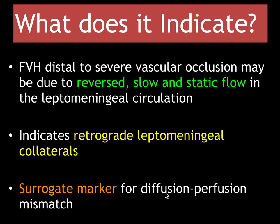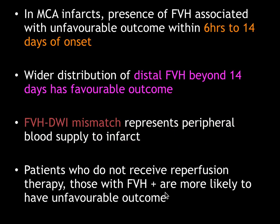So what does FVH indicate? FVH distal to severe vascular occlusion could be due to reversed, slow, and static flow in the leptomeningeal circulation. It indicates retrograde leptomeningeal collaterals and is also a surrogate marker for diffusion-perfusion mismatch. In MCA infarcts, the presence of FLAIR vascular hyperintensity is associated with unfavorable outcome within 6 hours to 14 days of onset. Wider distribution of distal FVH beyond 14 days has a favorable outcome.